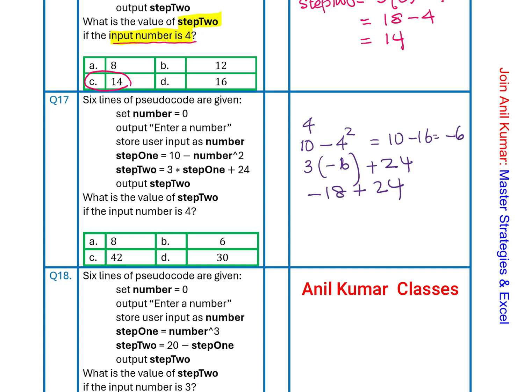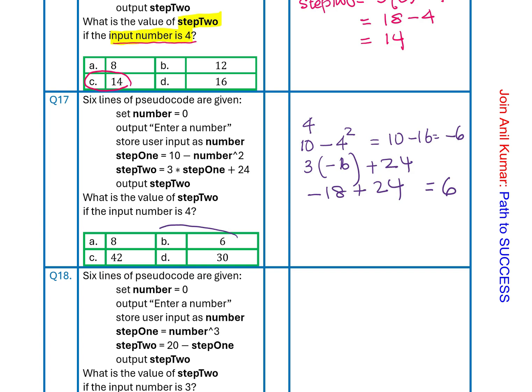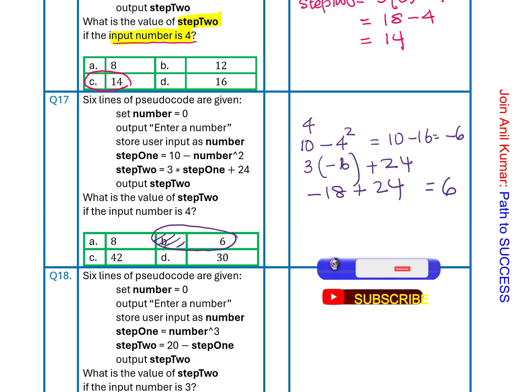Negative 18 plus 24 equals 6, which is option B. That is the solution to this particular problem. Go through this solution once again, understand the strategy, and then get ready for the third question.